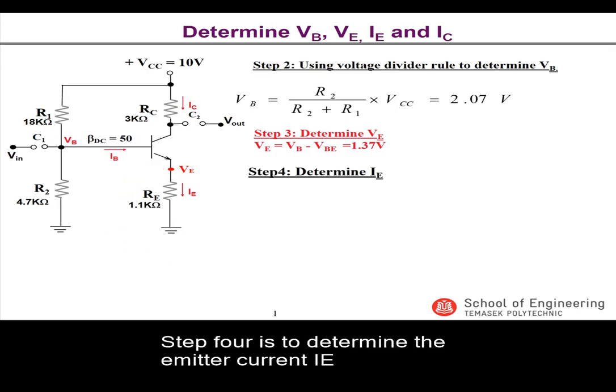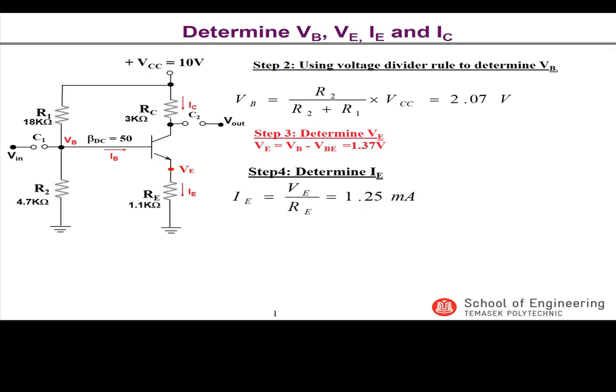Step 4 is to determine the emitter current IE. IE can be derived using Ohm's law by dividing the emitter voltage VE with the resistance of RE to give a value of 1.25 mA.